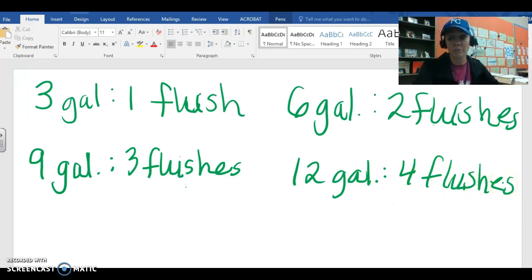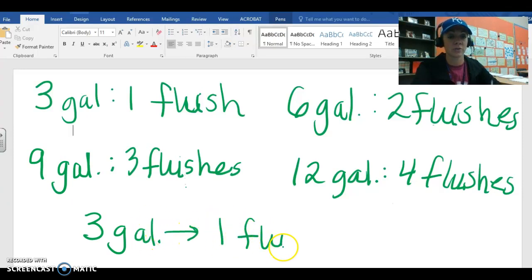Question B asks us what we notice about each ratio. I want you to pause the video for just a moment and think, what is our graph showing us about each ratio? Click pause so you can think about it for a second. Each ratio is equivalent to three gallons of water used every single time you flush. So, it's a three to one ratio.